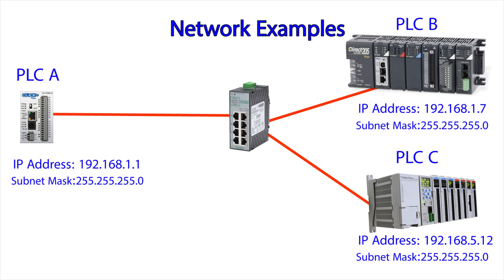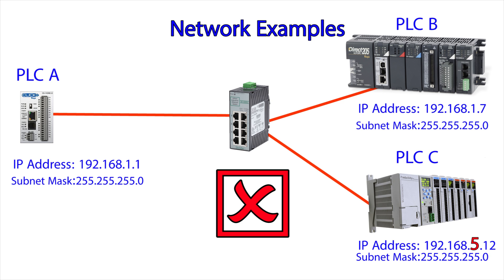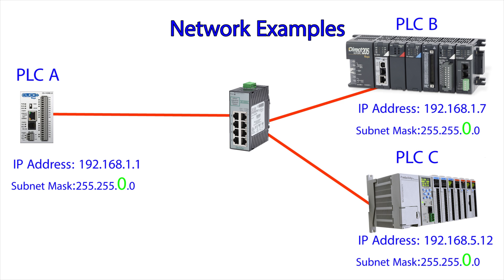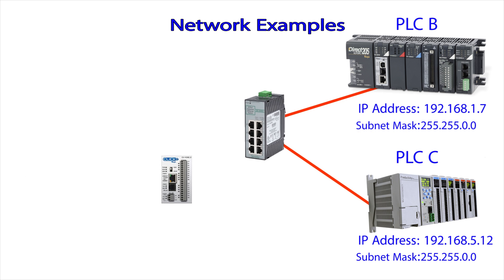Now let's add in PLC C to our switch. Will this PLC be able to talk with our other PLCs? No. We can see that the third group of PLC C's IP address does not match the other PLCs. How can we make all three of these devices talk to one another? Easy — we would just have to redefine the subnet mask of all these devices to be 255.255.0.0. Now all the devices can talk to one another. When the IP address and the subnet mask combine to allow devices to talk to one another, this is called a subnet.